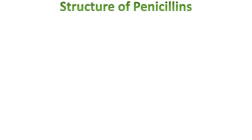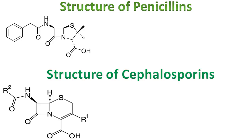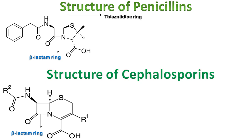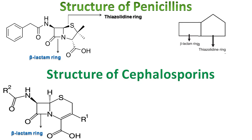This is the structure of penicillins and cephalosporins. There is a four-membered ring called the beta-lactam ring. Attached to this beta-lactam ring is a five-membered ring called the thiazolidine ring. When the beta-lactam ring is attached to the thiazolidine ring, this forms the antibiotic penicillin. The basic structure of all penicillins is the beta-lactam ring attached to the thiazolidine ring.